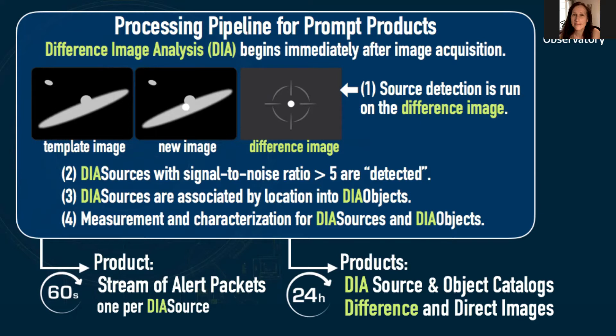The Prompt Processing Pipeline then runs measurement and characterization algorithms, the results of which are discussed in the following slides. This DIA processing completes within 60 seconds of image readout, at which time one alert packet is generated and released for every DIA source. Within 24 hours, updated versions of the DIA source and DIA object catalogs, along with direct and difference images, are available to scientists via the Rubin Science Platform, the RSP. Alerts, catalogs, and the RSP are all described in the following slides.